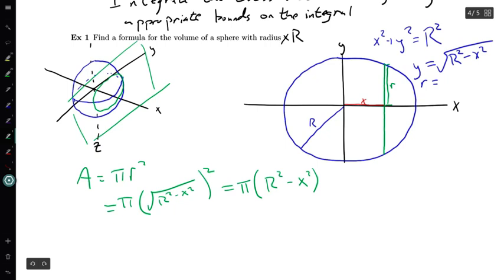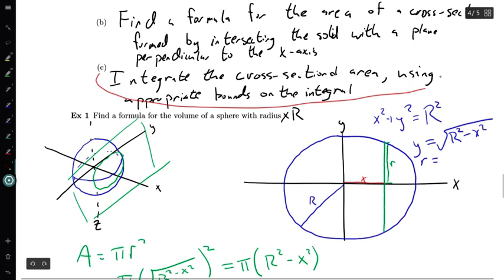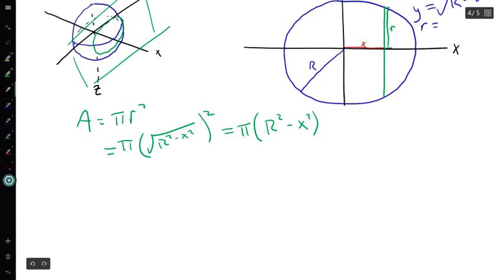Cool. So I now have a formula for the area of one of my cross-sections depending on which x value I pick. So this is a nice place to be, and what do I need to do with this? Well, now that I have found a formula for my area, I want to integrate the cross-sectional area using the appropriate bounds on the integral. So what I'm looking for here is the volume of my sphere is the integral of this pi times R squared minus x squared dx, and I want to think about what the bounds on x are.